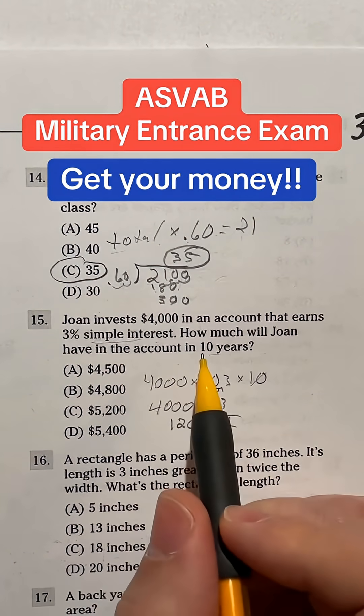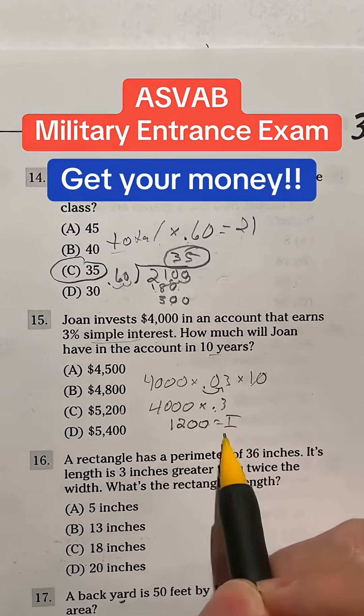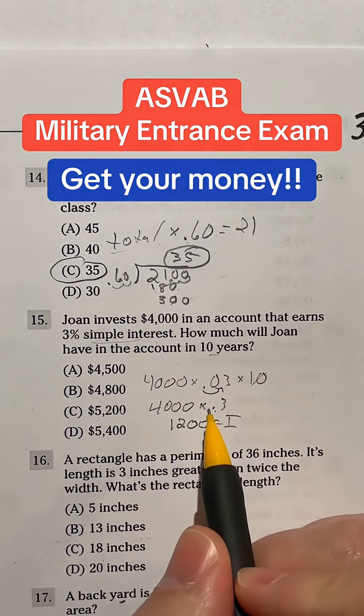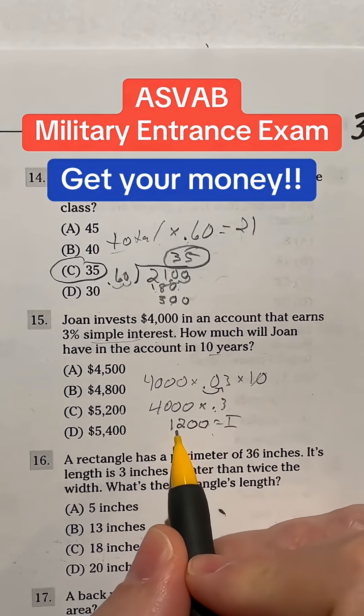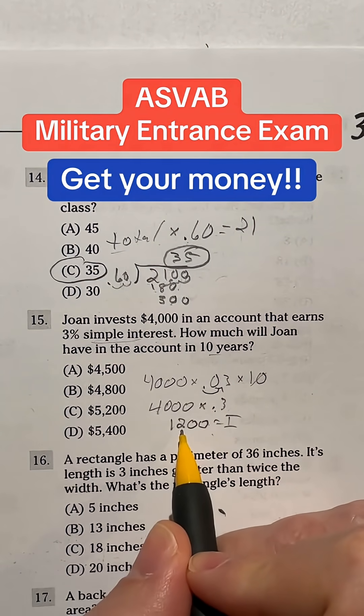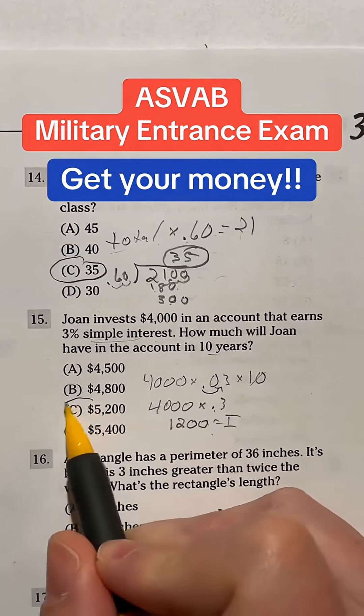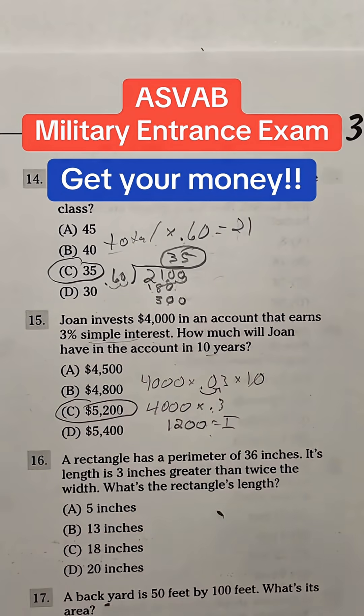Now, it says how much is in the account, so we are going to have to add that back to the original $4,000, to give us a final answer of $5,200, which is going to be answer C.